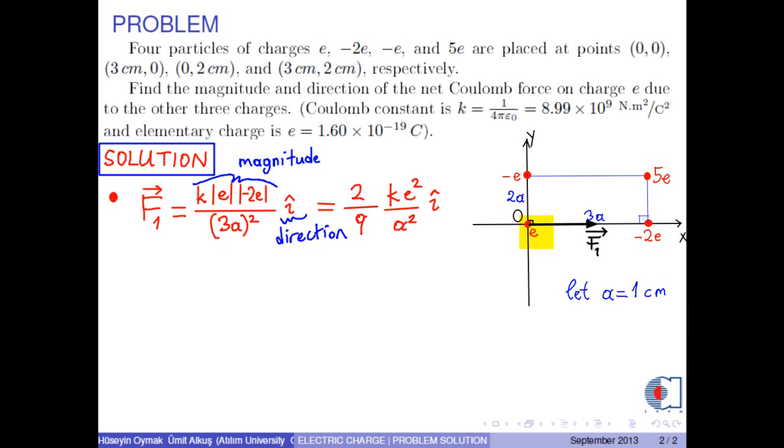Secondly, the Coulomb force on charge E due to negative E is again an attractive force, and its magnitude is K times absolute value of E times absolute value of negative E over 2A squared. And its direction is J hat, that is, in the positive Y direction. If you calculate, you obtain 1 fourth K times E squared over A squared J hat.